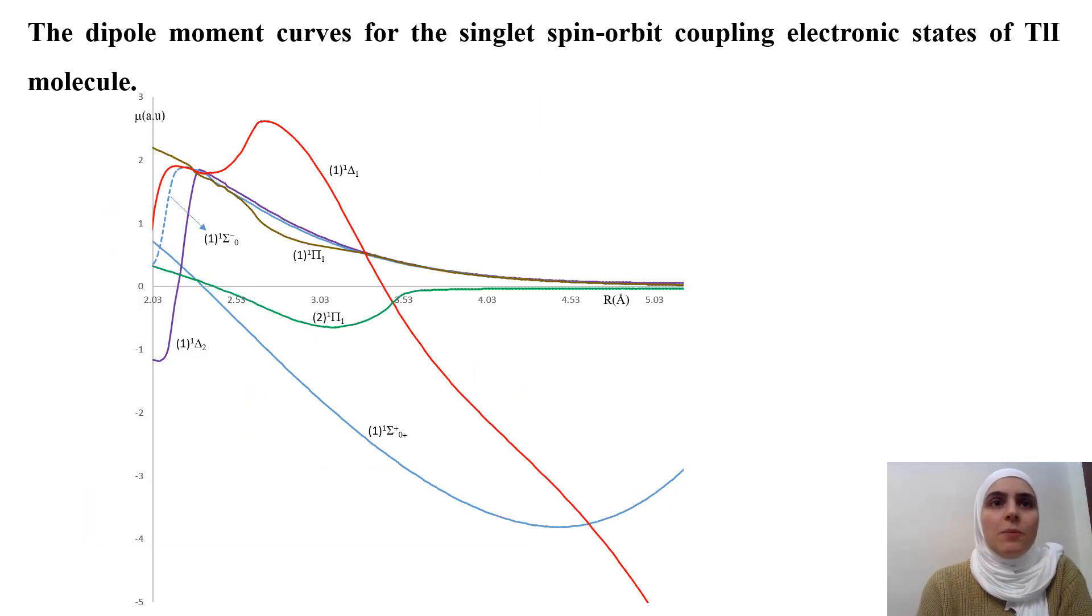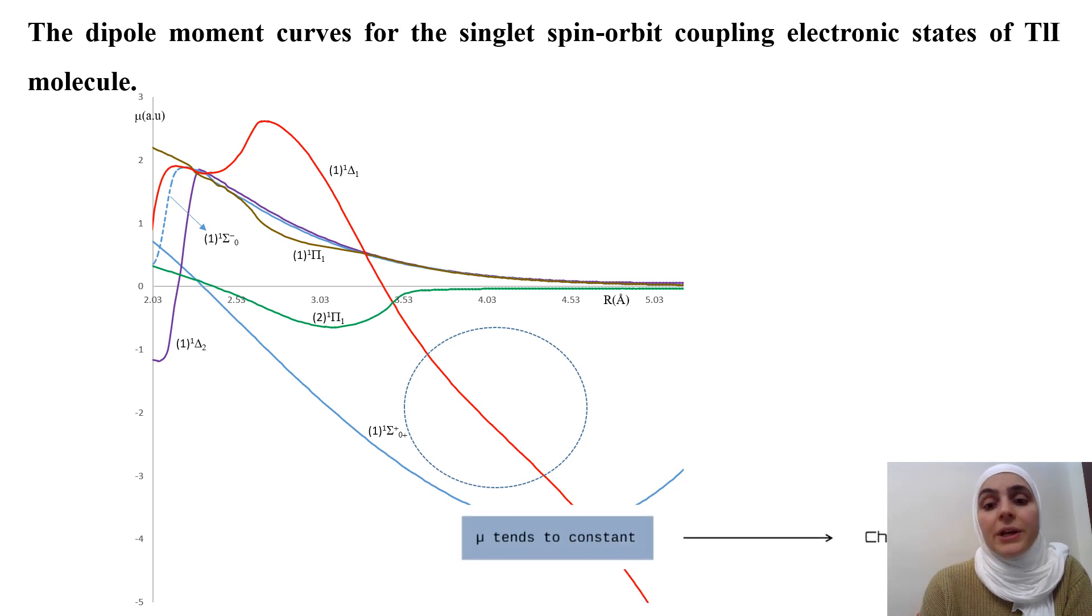Here we have the dipole moment curves are also investigated for the singlet spin orbit coupling electronic state of the TLI molecule. We can see the first delta electronic state that tends to have negative value in the negative region within R between 5.2 to 7.2 angstrom, where the molecule dissociates in the ionic fragment.